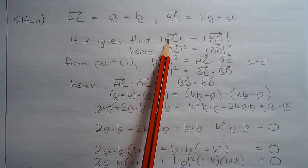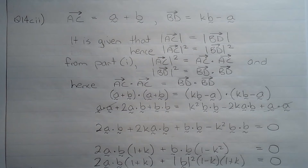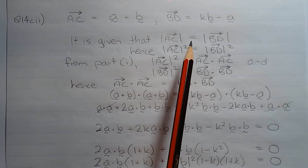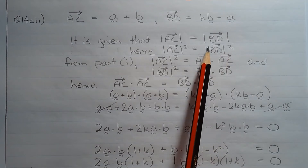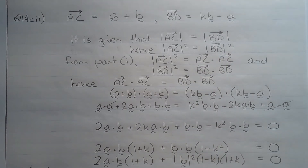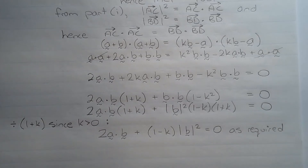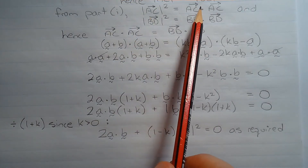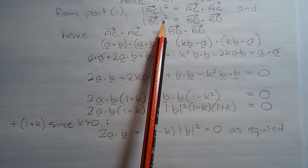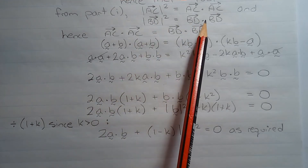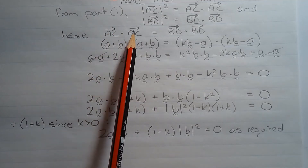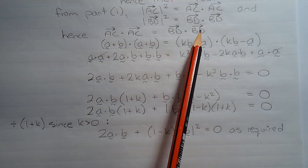It is given that the magnitude of vector AC is equal to the magnitude of vector BD — in other words, the two diagonals of the trapezium are equal in length. Squaring both sides, the square of the magnitude of vector AC equals the square of the magnitude of vector BD. From part 1, the square of the magnitude of vector AC equals the dot product of vector AC and vector AC, and the square of the magnitude of vector BD equals the dot product of vector BD and vector BD. Hence, the dot product of vector AC with itself equals the dot product of vector BD with itself.